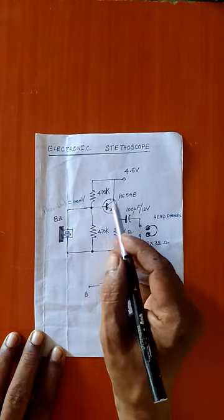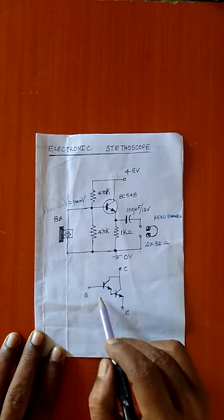To increase the input impedance of the amplifier, we can make use of Darlington transistor.